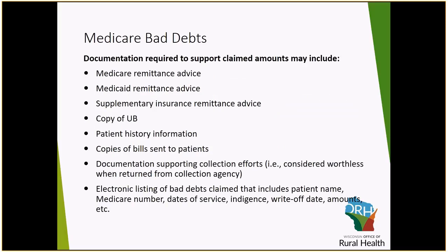This slide provides you with the documentation required to support the claims included within your Medicare cost report for allowable bad debts. You must submit an electronic listing of bad debts that includes the patient name, the Medicare number, the date of service, indigency status, the write-off date, and the amount of the write-off. We recommend that you have all other pieces of supporting documentation readily available upon question by your Medicare auditor.